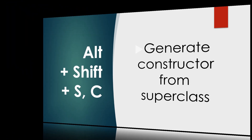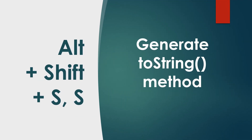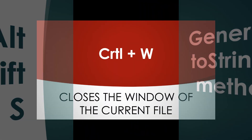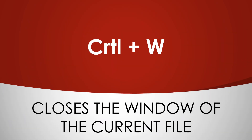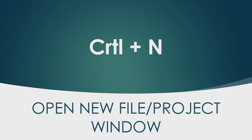Alt+Shift+S, C generates a constructor from the superclass. Alt+Shift+S, H generates the hashCode and equals methods. Alt+Shift+S, S generates the toString method. Ctrl+W closes the window of the currently viewed file.